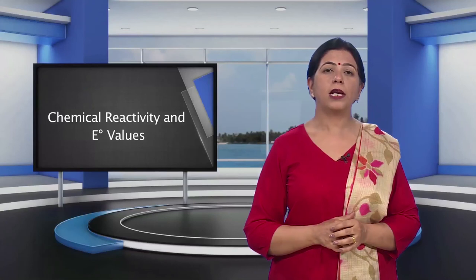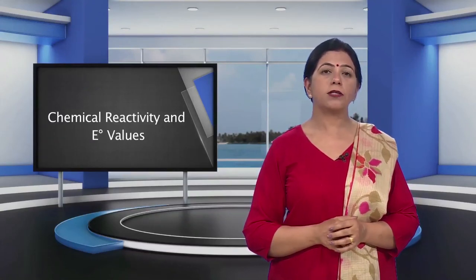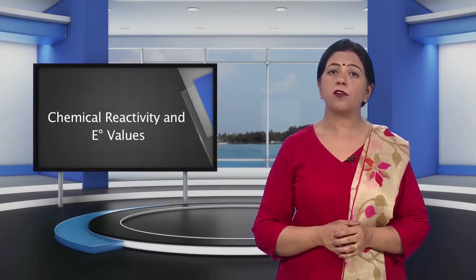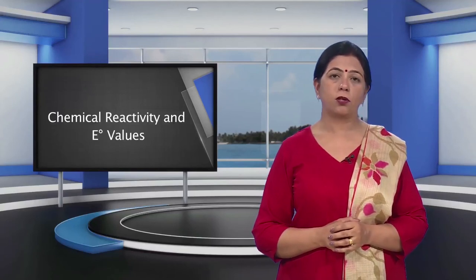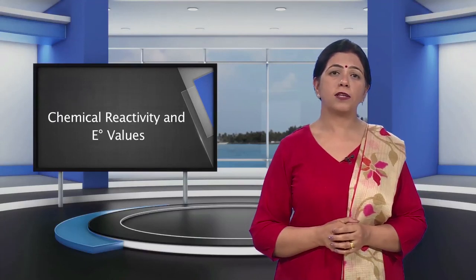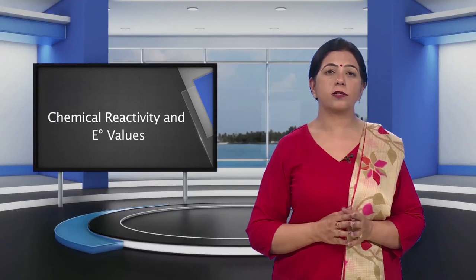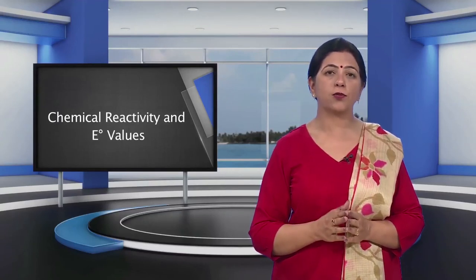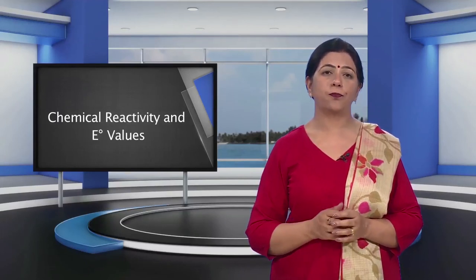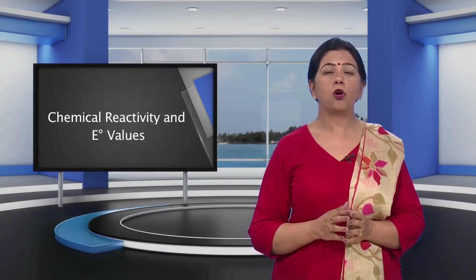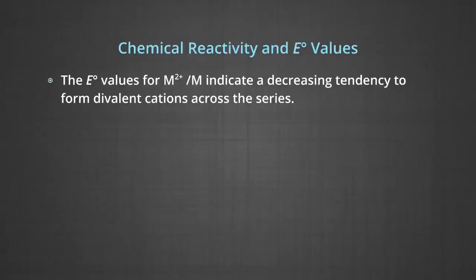Chemical reactivity and electrode potential values: The transition metals vary widely in their chemical reactivity. Many are sufficiently electropositive to dissolve in mineral acids, although a few are noble and unaffected by simple acids. The metals of the first series, with the exception of copper, are relatively more reactive and are oxidized by 1 molar hydrogen ions. Titanium and vanadium in practice are passive to dilute non-oxidizing acids at room temperature. The standard electrode potential values from M2+ to metal atom indicate a decreasing tendency to form divalent cations across the series.